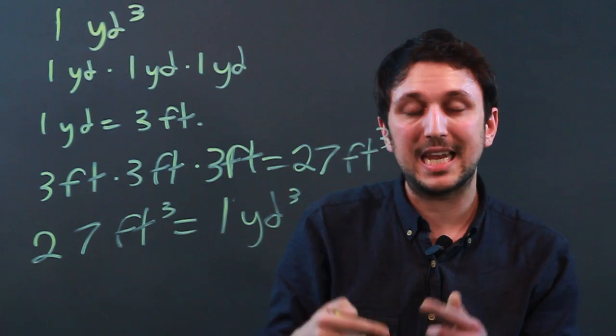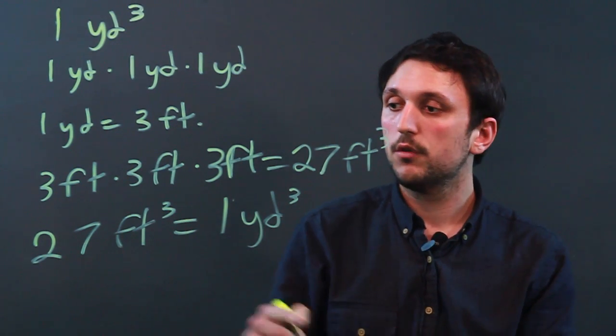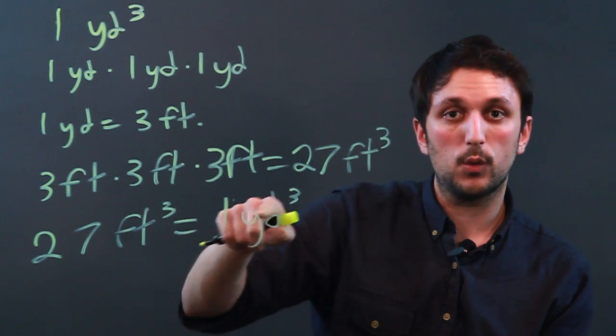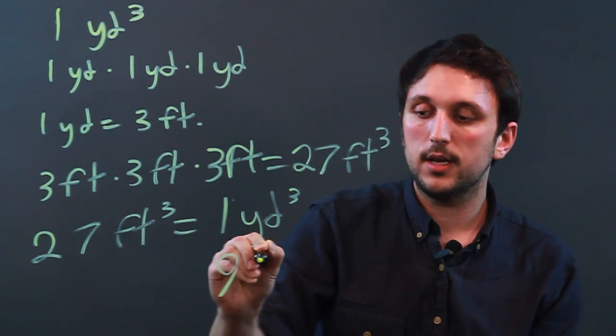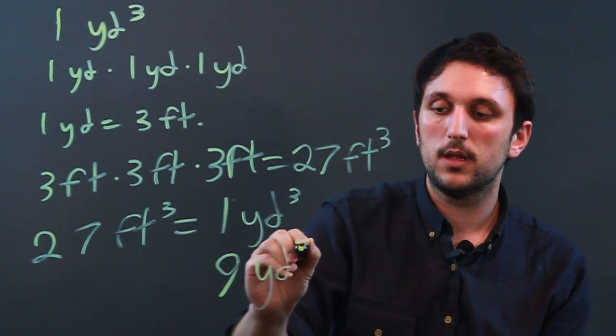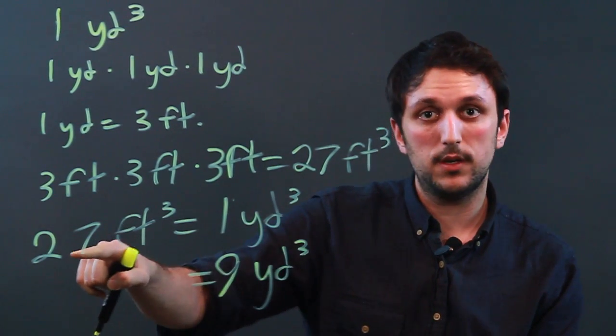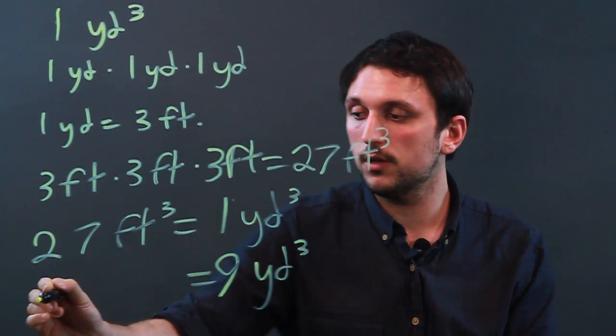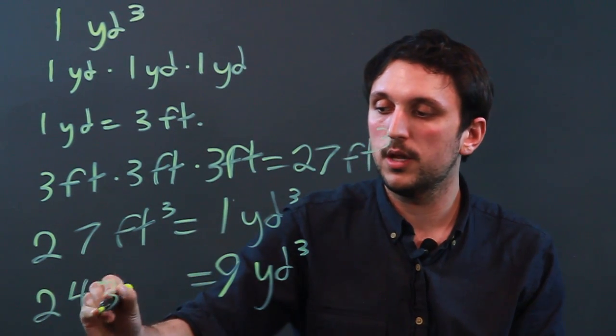And this is a ratio that holds up for any number of cubic yards. So if we have twenty-seven feet cubed for every one yard cubed, then nine cubic yards equals twenty-seven times nine, which is two hundred and forty-three feet cubed.